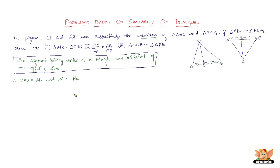Before we get into the solving part of the problem, let us briefly see how we are going to approach this. This problem is definitely going to be solved by using one of the three criteria for similarity of triangles: the side-side-side criterion, the angle-angle-angle criterion, or the side-angle-side criterion. The first thing to prove is triangle ADC similar to triangle FHG. We already have the given data that triangle ABC is similar to triangle FEG, so the bigger triangles are similar to each other.